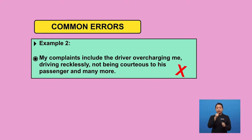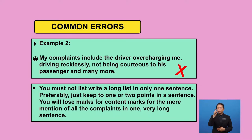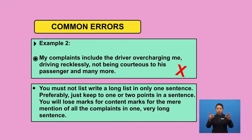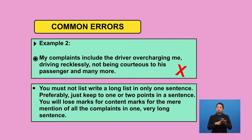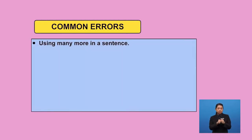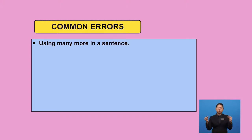Let us look at the second example. 'My complaints include the driver overcharging me, driving recklessly, not being cautious to his passenger, and many more.' This sentence is a complete sentence. However, this is not the correct way to list your complaints in a formal letter. You must not write a long list in only one sentence — preferably, just stick to one or two points in a sentence. You will lose marks for the mere mention of all the complaints in one very long sentence. Also, the use of 'many more' is not advisable — in a directed writing essay, you need to be more specific.